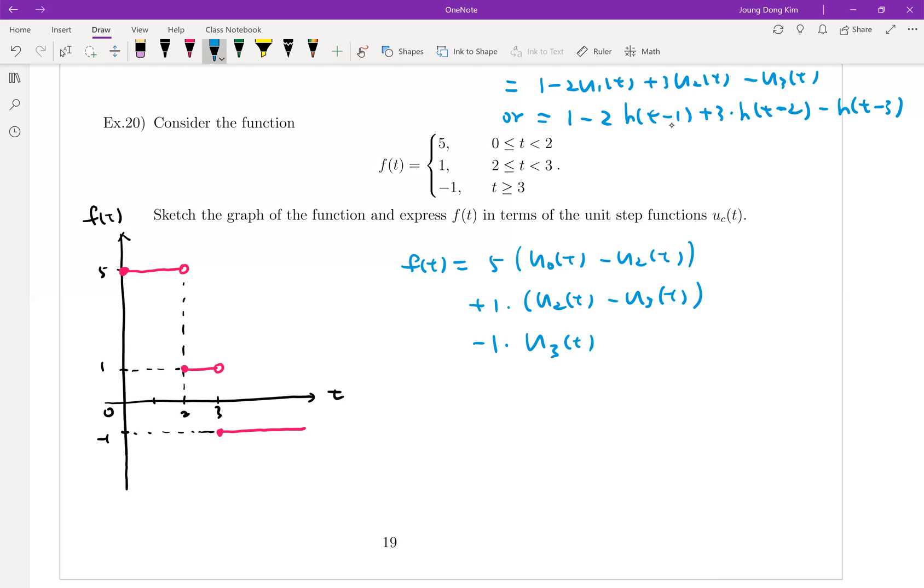Is it easy? So which is equal to, as I told you, U_0(t) is 1, then it will be 5 minus 5U_2(t) plus U_2(t) minus U_3(t) minus U_3(t). So finally it is equal to 5 minus 4U_2(t) minus 2U_3(t), right?